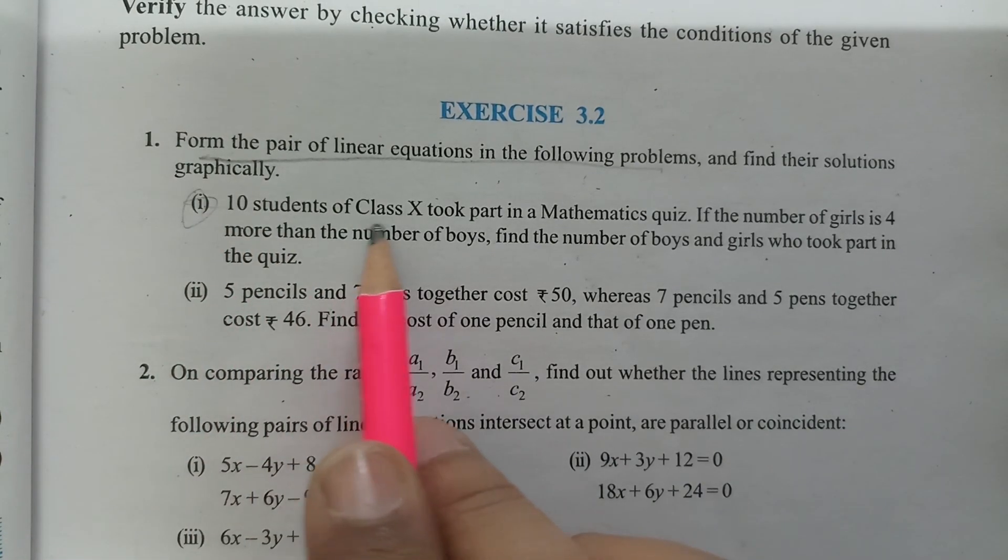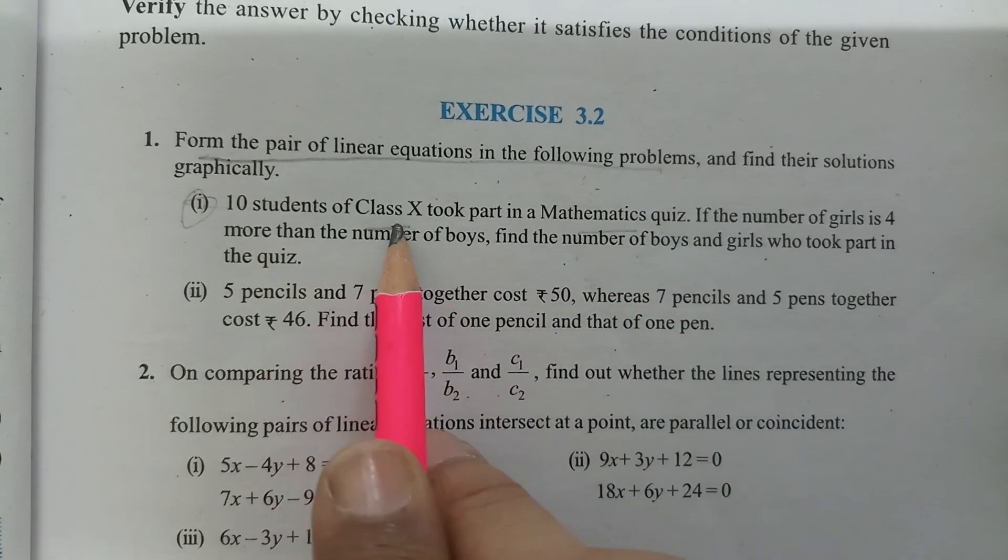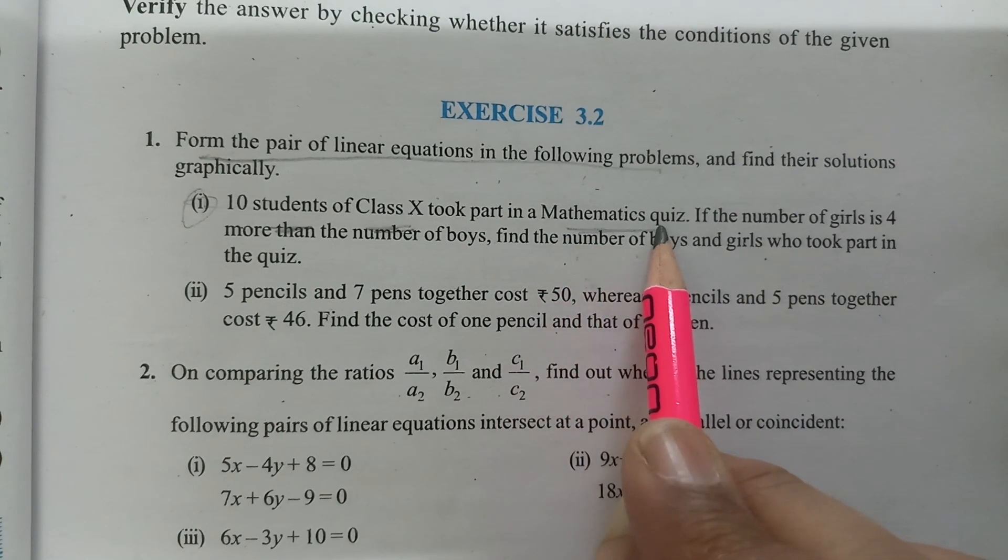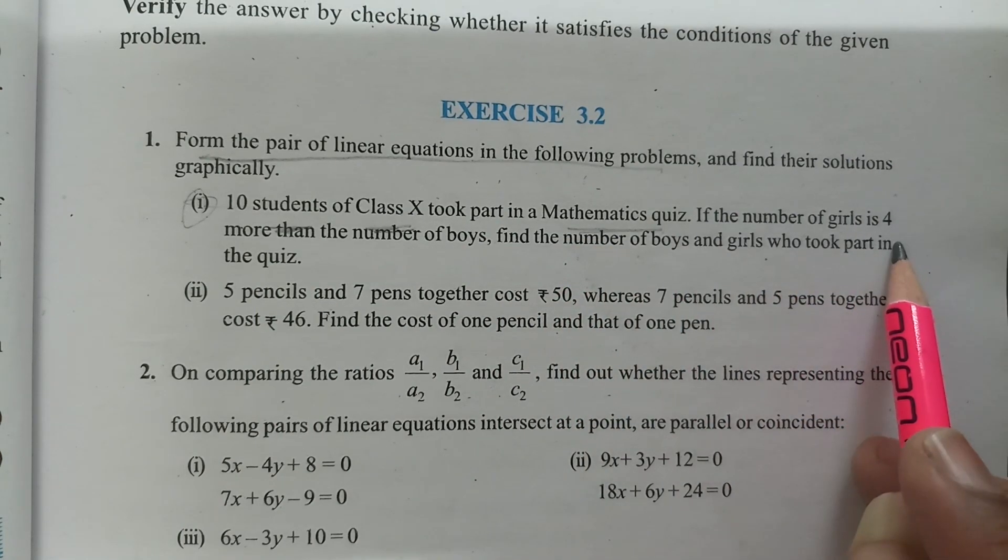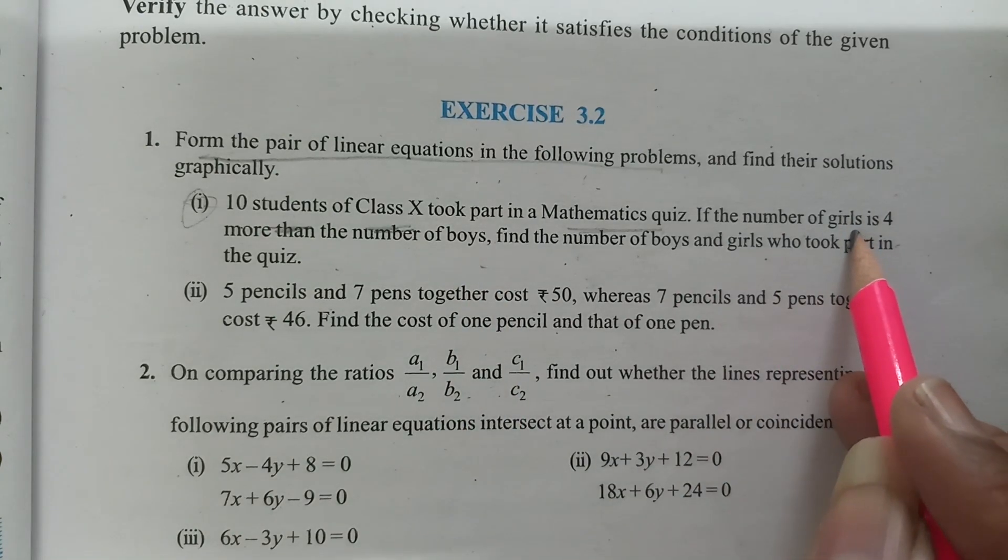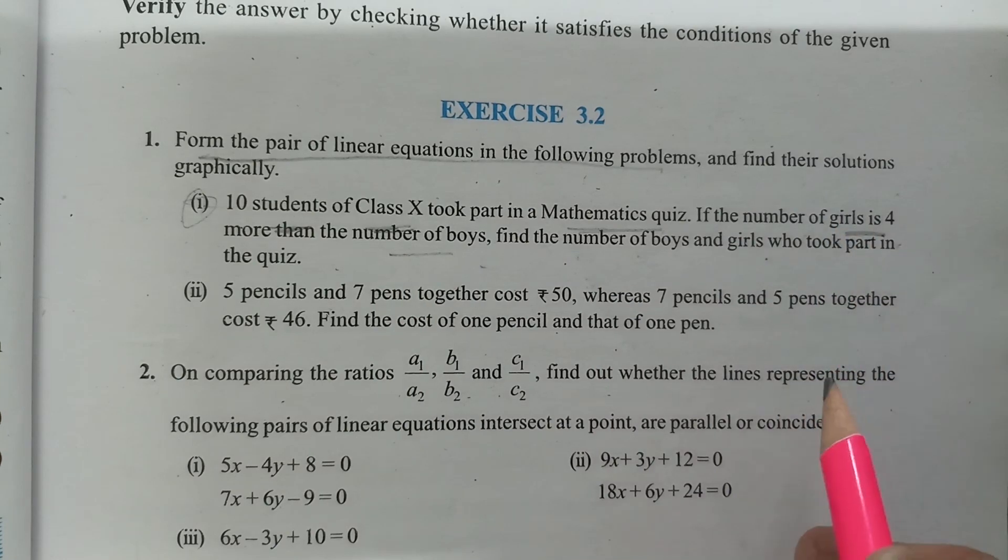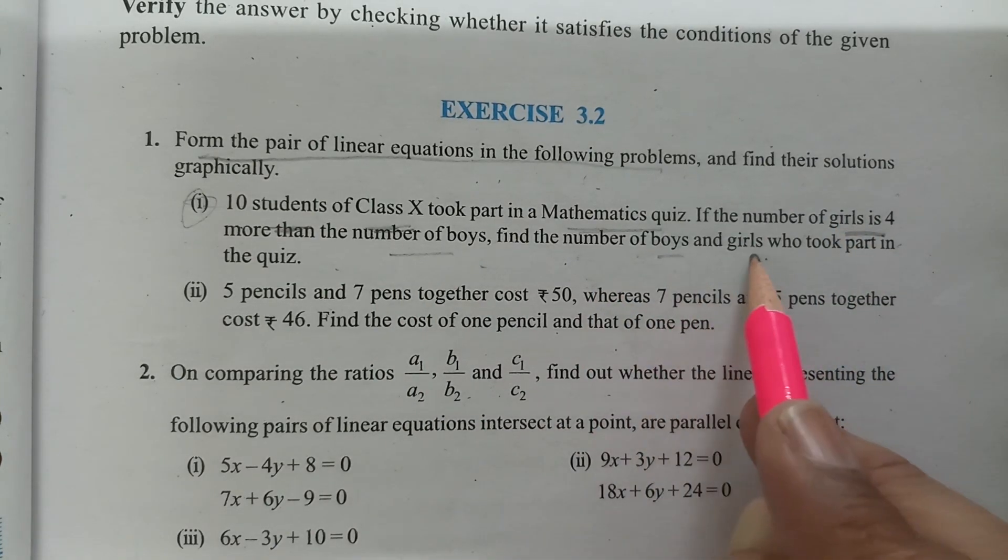For the first one: 10 students of class 10 took part in a mathematics quiz. If the number of girls is 4 more than the number of boys, we need to find the number of boys and number of girls.